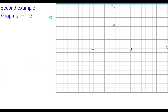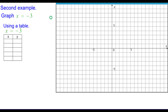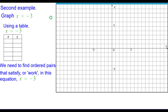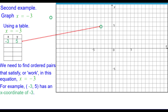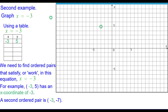Second example: graph x equals negative 3, using a table again. We need to find ordered pairs that satisfy or work in this equation. One example would be the point negative 3 comma 5, because it has an x-coordinate of negative 3. A second ordered pair is negative 3 comma negative 7, and we'll go ahead and plot that one.